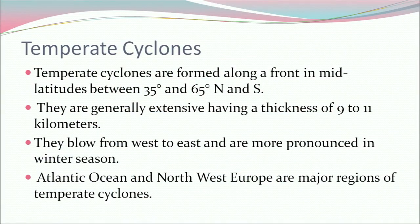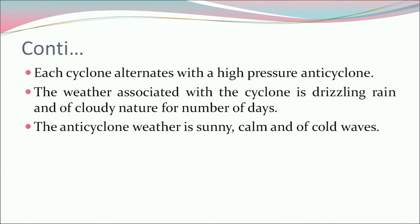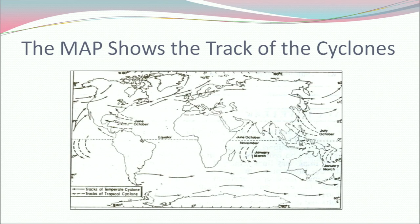Temperate cyclones are formed along a front in mid-latitudes, between 35 and 65 degrees north and south. They are generally extensive, having a thickness of 9 to 11 kilometers. They blow from west to east and are more pronounced in winter season. The Atlantic Ocean and northwest Europe are major regions of temperate cyclones. Each cyclone alternates with a high pressure anti-cyclone. The weather associated with the cyclone is drizzling rain and cloudy conditions for a number of days, while the anti-cyclone weather is sunny, calm, and cold.